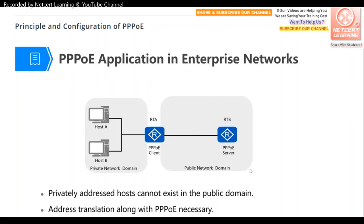In a PPPoE enterprise network application, there is a private network domain and a public network domain, with a PPPoE client between them and a PPPoE server in the public domain. Private addresses cannot exist in the public domain, so address translation along with PPPoE is necessary. When hosts in the private domain want to communicate with servers in the public network, they go through the PPPoE client, authenticate with the server, and then access the public network domain.